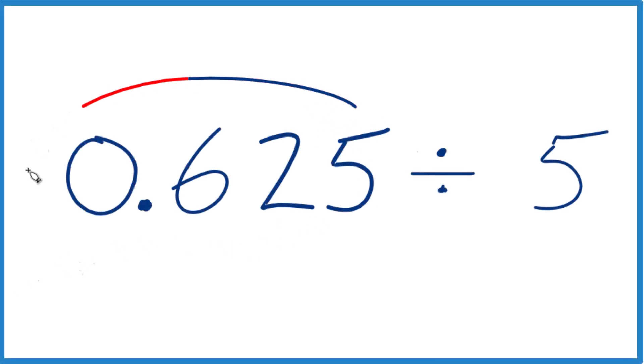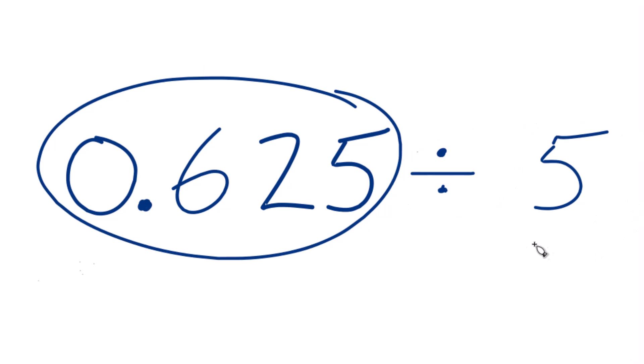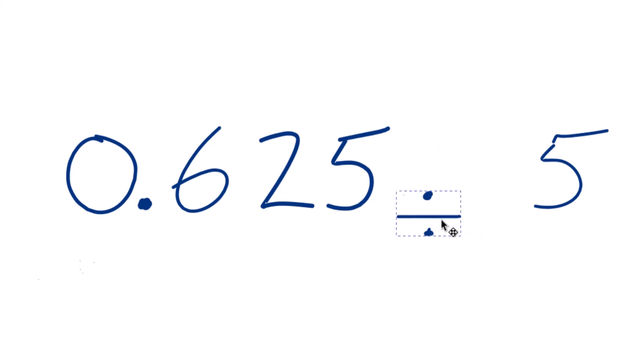Let's give this a try here. We have 0.625, and we want to divide that by 5. So one way to think about this, you could just write this as 0.625 and put it over 5 like this. This would also be okay.